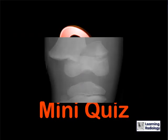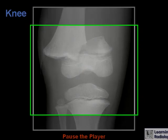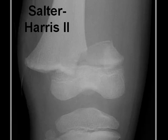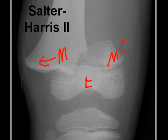Here's a mini quiz for you. Take a look at this knee injury and decide which type of Salter-Harris fracture it is. You can pause your mp3 player or computer. If you said it was a Salter-Harris 2, you were correct. This is one part of the metaphysis — this is the corner sign. Here's the remainder of the metaphysis that has been displaced laterally, and here is the epiphysis. The fracture extends along the epiphyseal plate and into the metaphysis — this is a Salter-Harris 2 fracture.